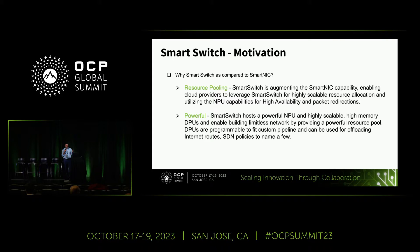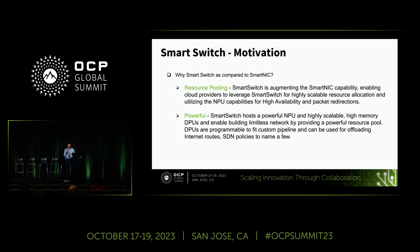As you have seen in the previous slide, it's a powerful device hosting multiple DPUs. This provides us a resource pooling capability. Smart Switch is augmenting the Smart NIC capability and enabling highly scalable resource allocation, utilizing the NPU capabilities for high availability and packet redirections. The Smart Switch concept is powerful — it has a powerful NPU and highly scalable, high memory DPUs. The DPUs are programmable to fit a custom pipeline and can be offloaded for internet routes or SDN policies.